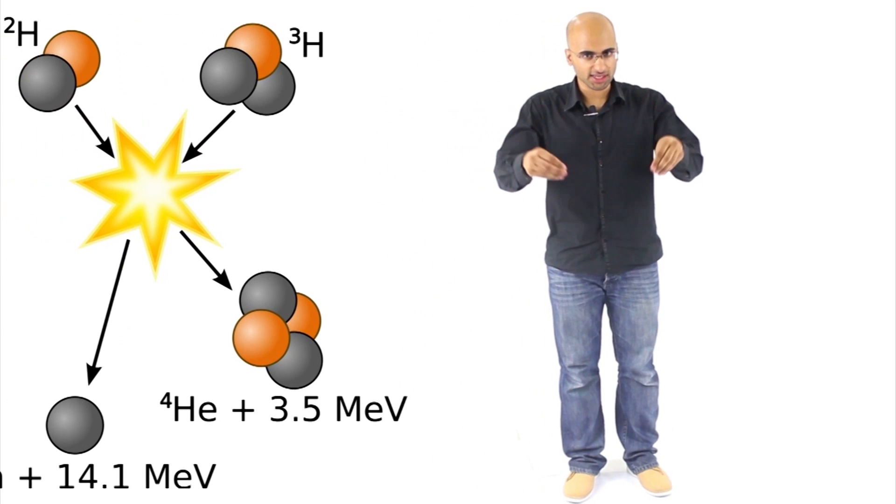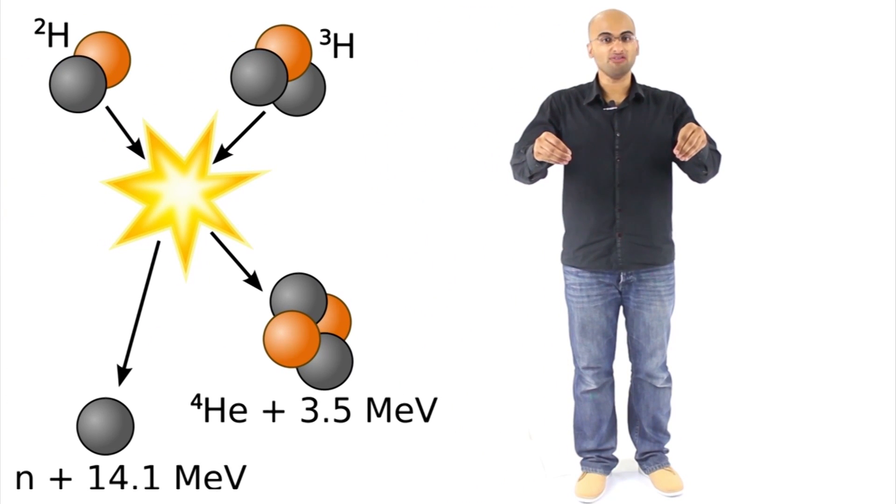As I've said, a fission bomb works by splitting an atom's nucleus in two. However, a hydrogen bomb, a fusion bomb, part of it, not all of it, works by fusing the nucleus of atoms together. As I've said, this is only one part of the hydrogen bomb, the fusion bomb.